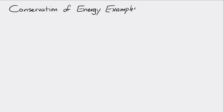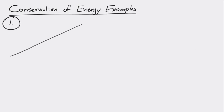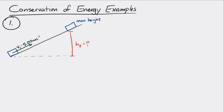Let's take a look at some conservation of energy examples, and we'll start with this one. A box at the bottom of a frictionless ramp has an initial speed of 5 meters per second. What is the maximum height the box reaches on the ramp?